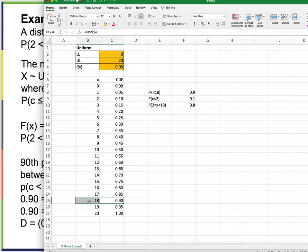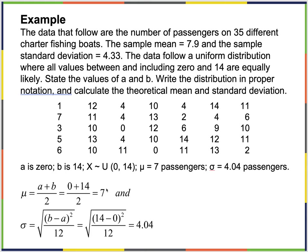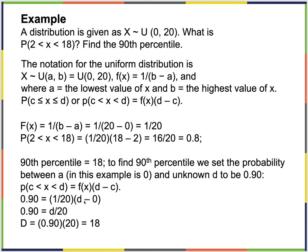The 90th percentile is where the cumulative distribution function equals 90%. Using the formula: probability equals f(x) times (d - c). Here c = 0 and f(x) = 1/20, so 0.90 = (1/20) times d. Multiplying both sides by 20 gives d = 18. The 90th percentile is 18.